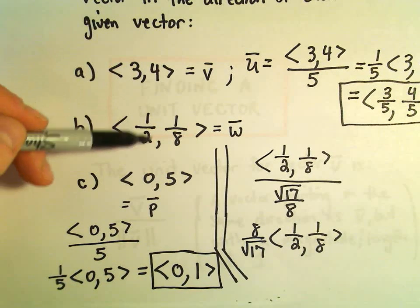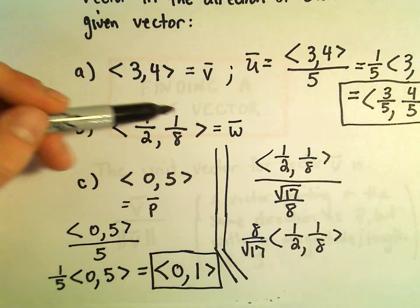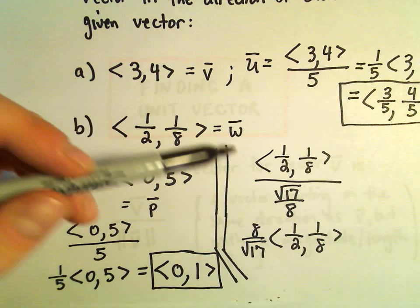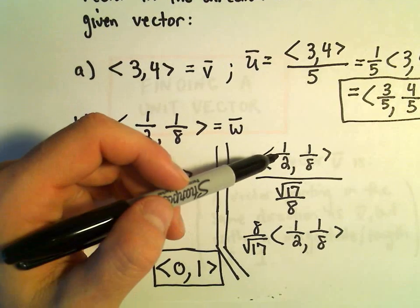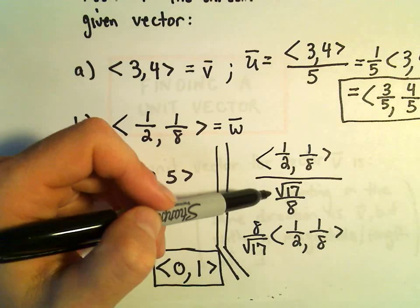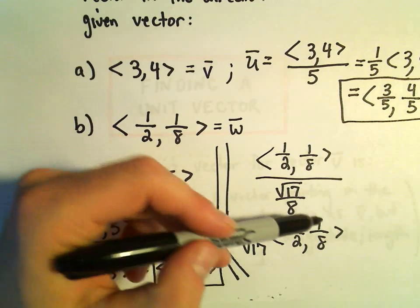if you're given kind of not nice numbers, where you have to square them and have fractions or weird decimals or et cetera, et cetera. But other than that, that's all there is to it. You just take the magnitude, excuse me, take your vector, divide it by the magnitude, distribute that number inside, and that's pretty much it.